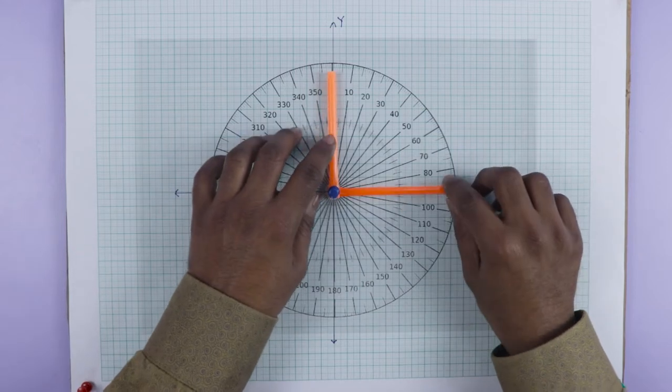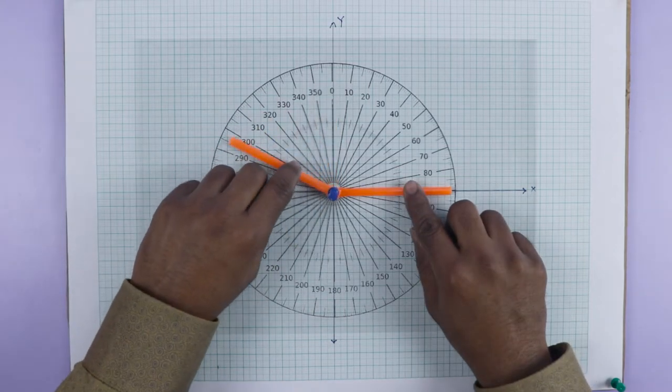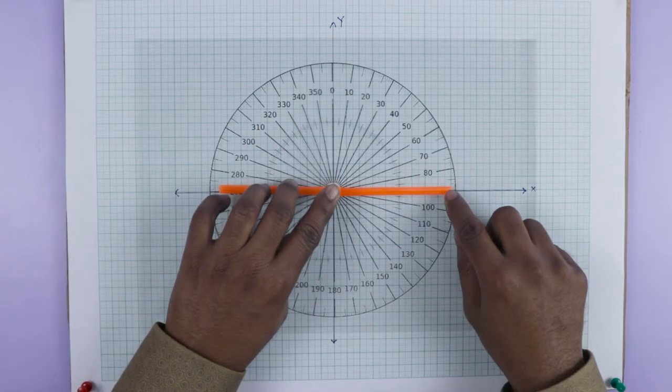Now attach a 360-degree protractor to the center of the clock. This setup can be used for all activities in this lesson. I distributed these materials to the group of students so that they could do their activities.